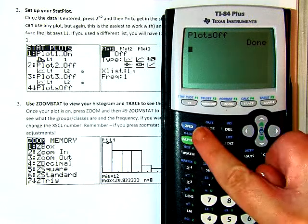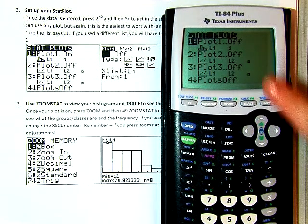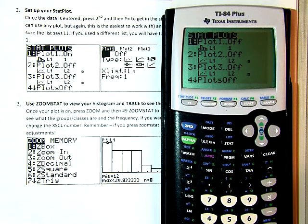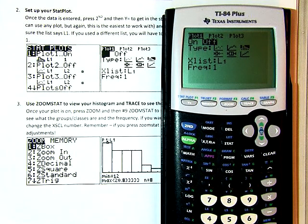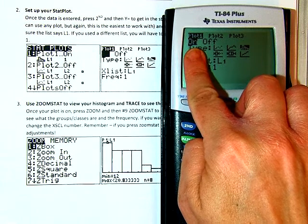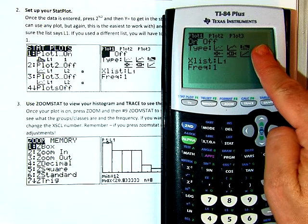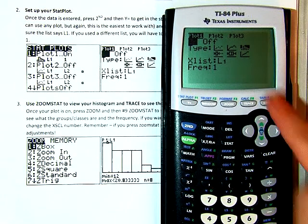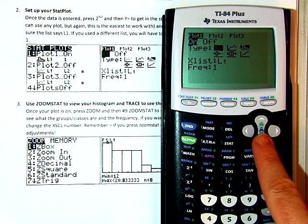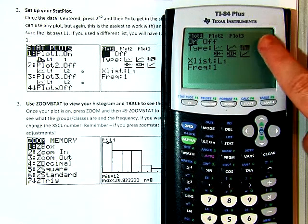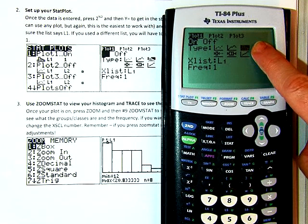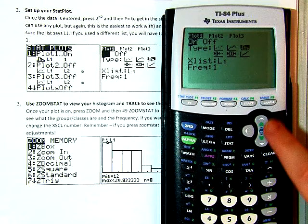Then I'm going to go back to my stat plot. So second, y equals. I should see off, off, off. And then I want to click on that very first one right here. I want to hit enter. And I want to turn it on. So I need to make sure that my blinking cursor is on on, and then I can hit enter. So that stores it on. And then I need to move down to what type of graph do I want? Well, I want a histogram, right? I don't want a scatter plot. I don't want a back plot. I don't want a line graph. I want a histogram. So I'm using my arrow down to get to the type, and then my arrow to the right to make sure that I have a black blinking cursor on the histogram.